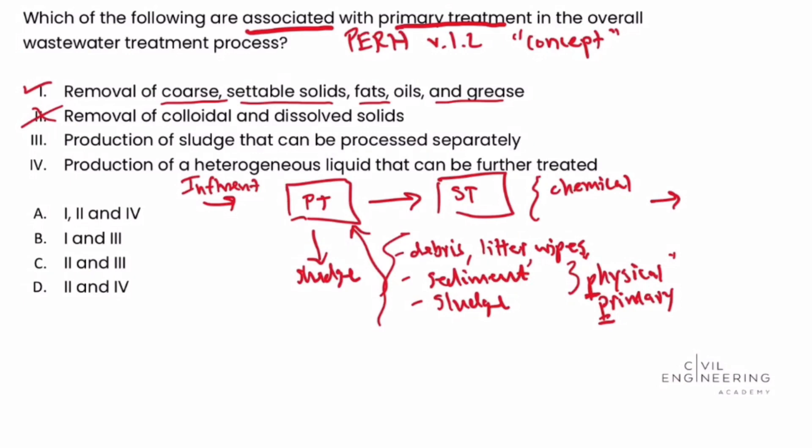Roman numeral three, production of sludge that can be processed separately. So yes, in that primary treatment process, these items that we talked about that settle out into this sludge that's then handled separately. So yes, Roman numeral three applies to primary treatment.